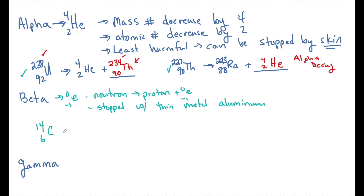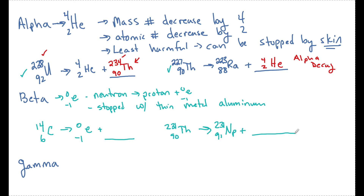Let's look at some examples. I have carbon-14 and it undergoes beta decay — we want to know what does carbon transmutate into? In another example, thorium-231 transmutates into neptunium-231 — what type of decay is this? For carbon-14: if I decrease my proton number by one I'll need a seven here, and nothing happens to the mass number, so that's going to be 14 and atomic number seven is nitrogen. For thorium: the proton number decreased and the mass number stayed the same — this is beta decay.